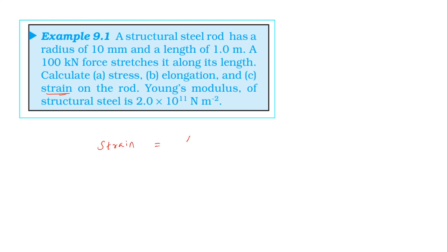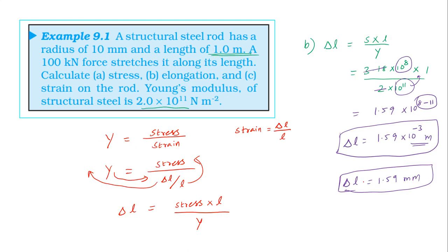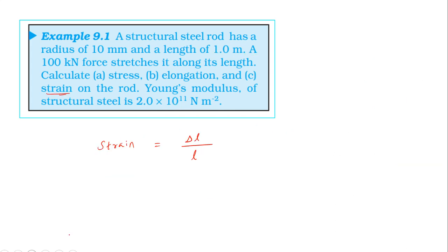For strain: strain equals change in length divided by original length. Change in length is 1.59 × 10⁻³ m, divided by original length 1 meter. The meter units cancel, so strain has no unit. Strain = 1.59 × 10⁻³.